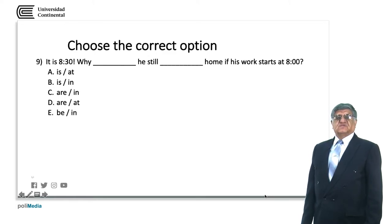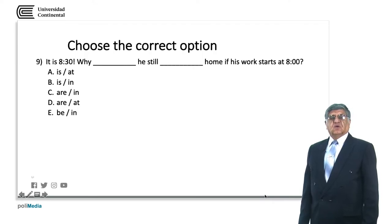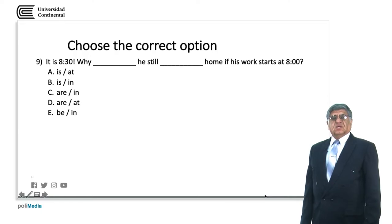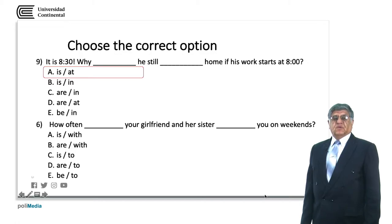It is half past eight. We need the third person singular, so C, D, and E are not correct. 'Why is he still at home if his work starts at eight?' — 'in home' is not correct, so our answer is A. 'How often' — your girlfriend and her sister is plural, so we need a plural form. B and D with 'are' on weekends might be correct; 'to' with 'you' on weekends is not correct. Our answer is B.